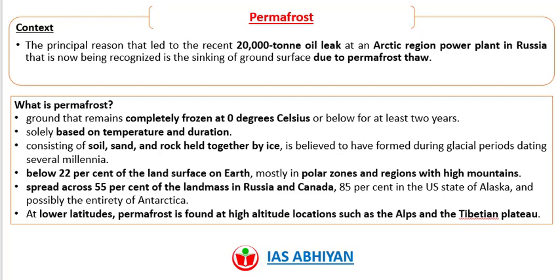Permafrost is believed to have formed during glacial periods dating several millennia. It lies below 22% of the land surface on Earth, mostly in polar zones and regions with high mountains. It spreads across 55% of the landmass of Russia and Canada, 85% in the US state of Alaska, and possibly entirely of Antarctica. At lower latitudes, permafrost is found at high-altitude locations such as the Alps and the Tibetan Plateau.